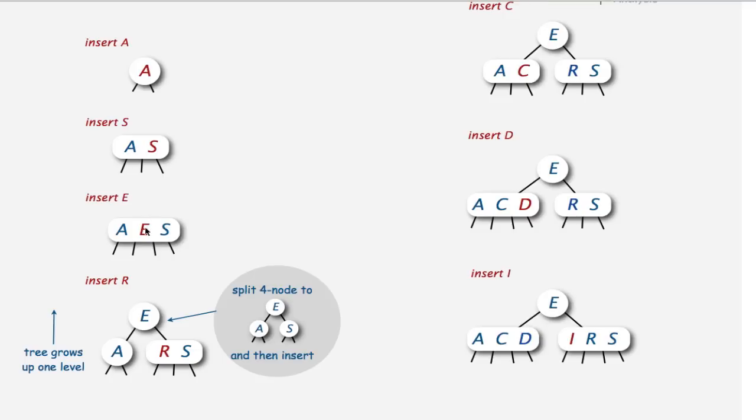Basically, we push the E up, but there's nothing up to take it. So we just create this new node. And now we have a deeper tree, a tree of depth 1. And then we can easily add our R to this node S here. And as we continue, we insert C. It inserts without a problem.